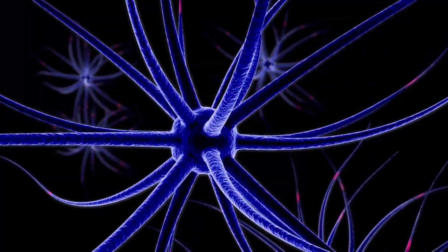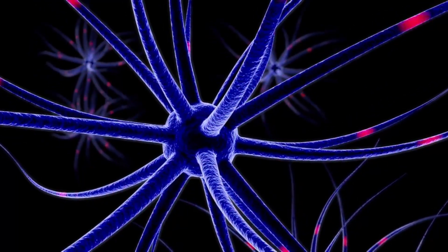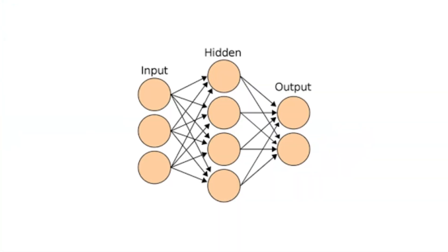These layers transmit and process information from one layer to another. This neural network is similar to the neurons in the human brain, which are responsible for sending and receiving information from one part of the brain to the other. When we feed data into the AI model, it starts with the input layer.